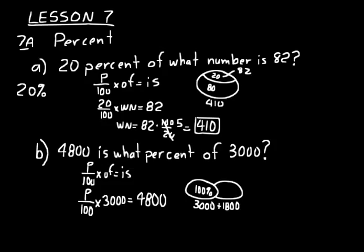On the left side, we can simplify 3,000 over 100. That would just equal a 30. And then we could divide both sides by 30, and we'd have P equals 4,800 over 30, or 480 over 3, or 160. And so that's our percentage. And we'll put a percent symbol at the end, 160%. 4,800 is 160% of 3,000.